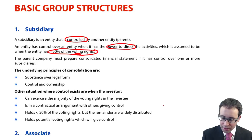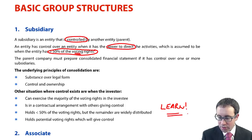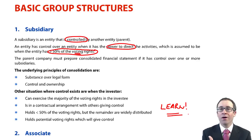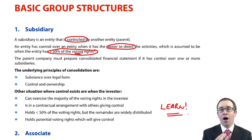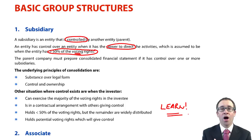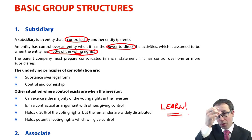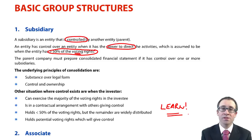Question one in the exam is highly computational, with around 35 marks based around groups. There are also individual accounting standards examined — it's not primarily just a group accounts question. Groups can also appear in question two and question three, where the questions are more discursive, asking you to apply a specific rule to a given scenario and explain the justification of your accounting treatment. Within question one, you will typically own greater than 50% of the voting rights or equity share capital to demonstrate control.